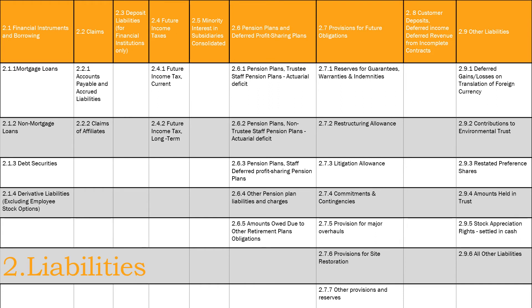2. Liabilities. 2.1. Financial instruments and borrowing: 2.1.1 Mortgage loans; 2.1.2 Non-mortgage loans; 2.1.3 Debt securities; 2.1.4 Derivative liabilities, excluding employee stock options. 2.2. Claims: 2.2.1 Accounts payable and accrued liabilities; 2.2.2 Claims of affiliates. 2.3. Deposit liabilities — for financial institutions only.